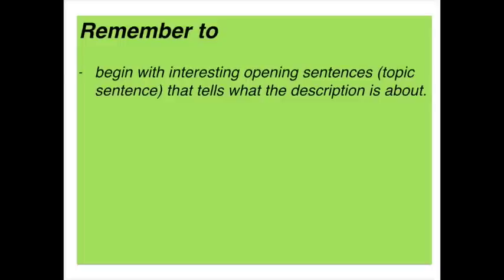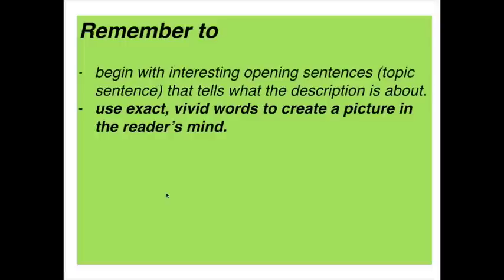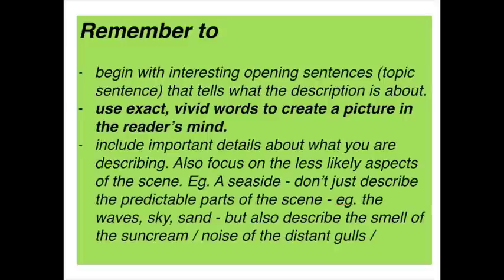Once you've covered the senses, remember to begin with interesting opening sentences — usually a topic sentence that tells what the description is about. Use exact, vivid words to create a picture in the reader's mind, mainly through verb choices and adjectives. Also include important details about what you are describing, but focus on the less likely aspects of the scene so your writing doesn't become too predictable. For example, at the seaside, don't just describe the waves, sky and sand — also describe the smell of sun cream or the noise of distant gulls.